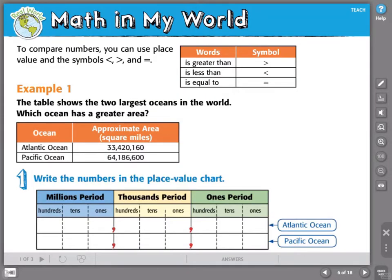When we are comparing, we need to use certain symbols. We have this symbol, which means greater than. This symbol tells me less than. And finally, our equal sign means that they are equal to, they have the same value.